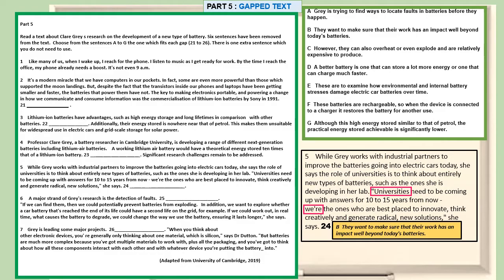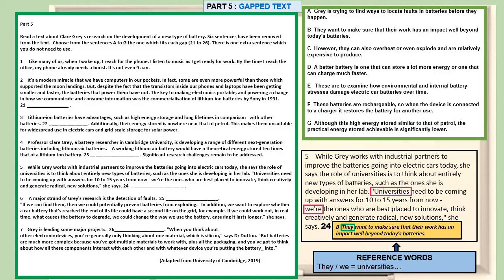Option B reads: 'They want to make sure that their work has an impact well beyond these batteries.' The pronoun 'they' is referring to the universities. This again emphasizes the role of universities. So for question 24, the best sentence is B — 'They want to make sure that their work has an impact well beyond these batteries.' The pronouns 'they' and 'we' both refer to the noun 'universities,' demonstrating the importance of reference words in helping us find the most accurate answer.